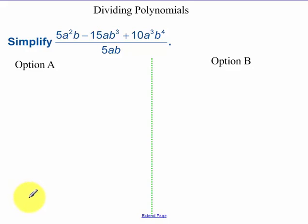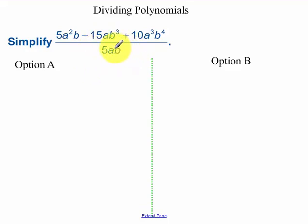Today we're going to be talking about dividing polynomials. Our first example happens when you have a monomial, or a polynomial of one term, in your denominator.